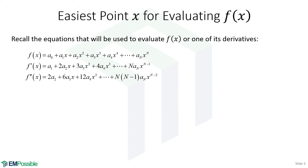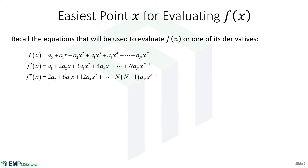Now I ask the question: what's the easiest value of x for evaluating f(x) or any of its derivatives? If we look at these expressions, what value of x would make this easiest? What about x equals zero? If we do that, everything with an x or x squared or x cubed just drops, and we're really just left with those first terms. If there's a way where we only have to evaluate that first term in all of these polynomial equations, that would make deriving finite difference approximations very, very easy.